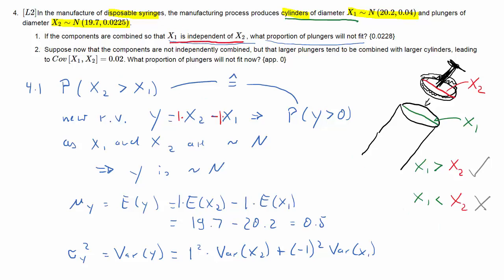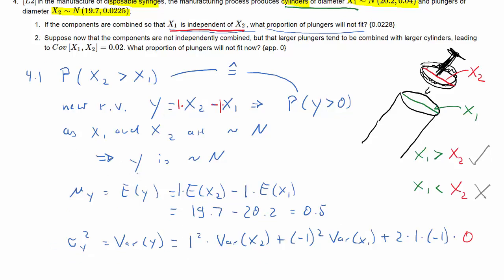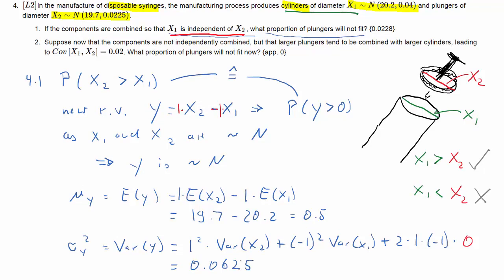And now, of course, there's going to be a covariance part, but since X1 and X2 are independent, that covariance part is just going to be 0 at the end. It's 2 times the two weights times the covariance, and that's 0. So now we just need to plug in our values for the variance of X2 and X1. And what we get, if you do the calculations, is 0.0625.